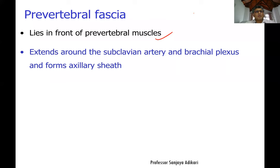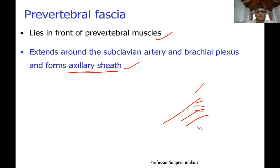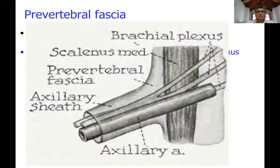The axillary sheath, which encircles the branches of the brachial plexus and the axillary artery in the upper limb, is considered an extension of the pre-vertebral fascia. The structures behind the pre-vertebral fascia — the brachial plexus branches and subclavian artery — drag the pre-vertebral fascia with them as they enter the upper limb, forming the axillary sheath.